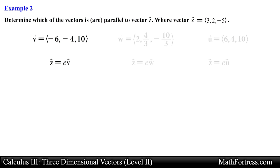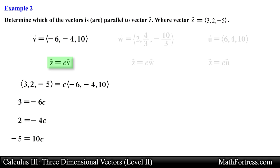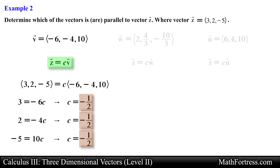For the first vector we are essentially trying to show that vector z equals c times vector v. We can go ahead and break apart the vector equation into its three components and solve for the constant c. Notice that in all three components we obtained the same constant. This means that we can multiply vector v by the scalar negative one-half and obtain vector z, meaning that vector v is parallel to vector z.